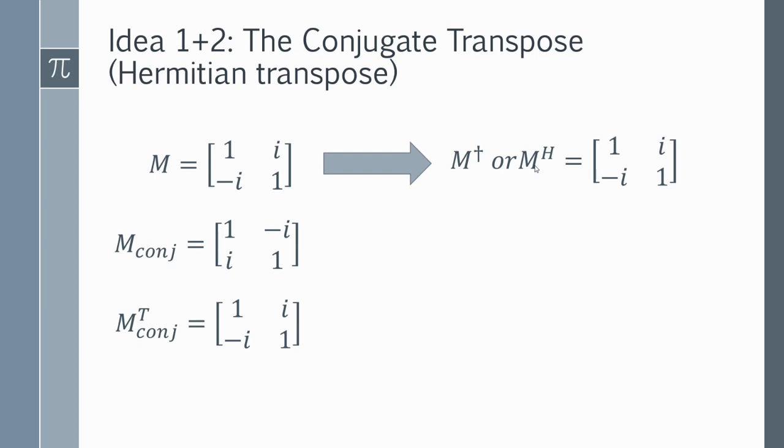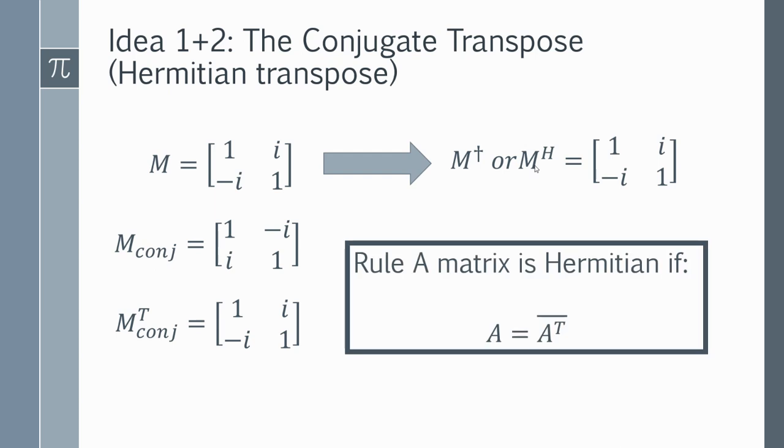And this brings us to the fundamental definition of what a Hermitian matrix actually is. A Hermitian matrix A is Hermitian if and only if your matrix A is equal to the conjugate transpose. And you can see that in this case, this matrix is going to be Hermitian because the matrix is equal to its complex conjugate transpose.